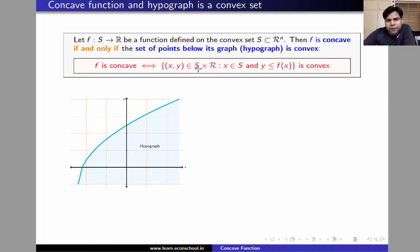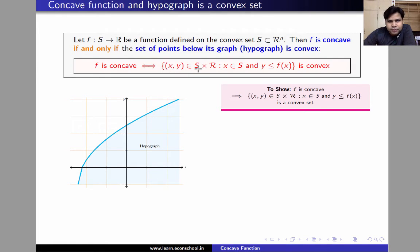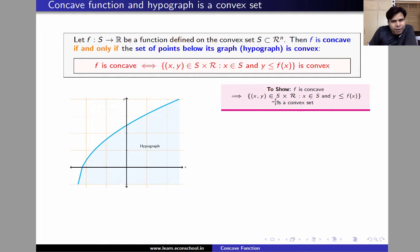Let us first prove that if f is concave, then the hypograph is a convex set. We are going to assume that f is concave and prove that the hypograph is a convex set. To show a set is convex, we pick two arbitrary points from that set and an arbitrary lambda between 0 and 1, and show that the convex combination of those two points lies inside the set.